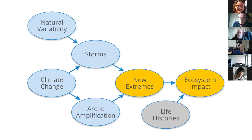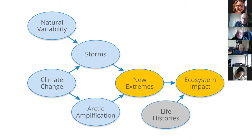They're less predictable in terms of timing and location. Once you have these new extremes, that interacts with the life history — many animals are tuned to the natural variability of the Arctic, but when you combine that with Arctic amplification you have interactions. We don't necessarily have an impact every year; the way of thinking about it is you increase the frequency of the impacts.